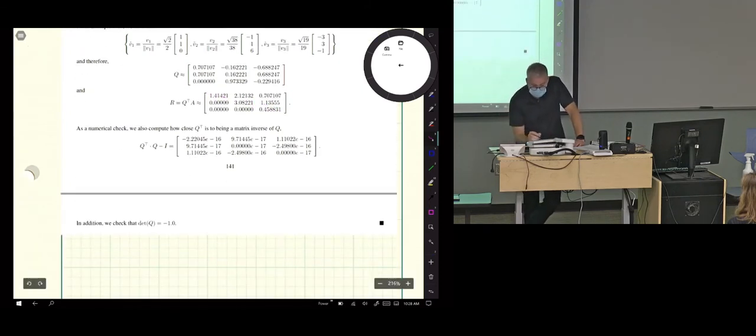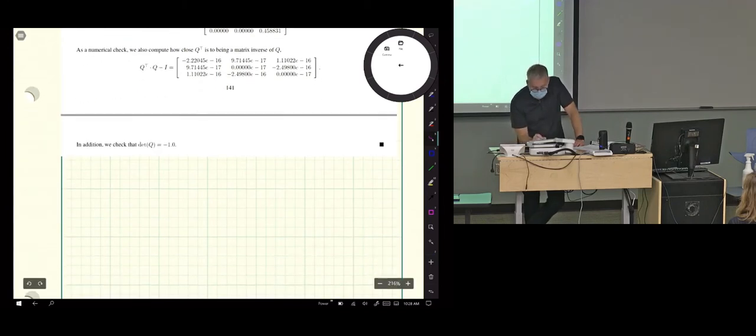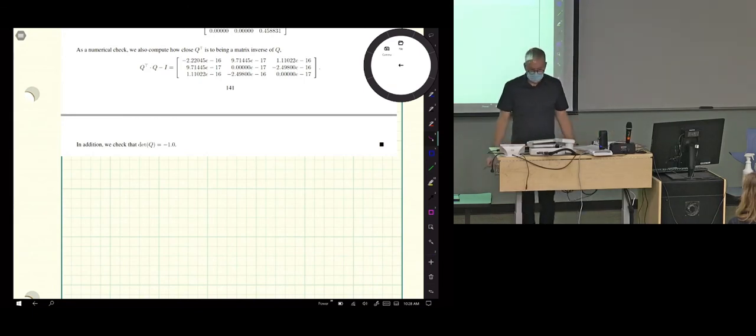And then to show you that Q transpose minus Q transpose times Q is the identity, I do the Q transpose times Q minus the identity, and the biggest number we have is something like this one here, which is 10 to the minus 16. So, it looks pretty good. That's close enough to zero for you guys now? And then a fact that we haven't gone through is that these orthogonal matrices, their determinant is either plus one or minus one, just like permutation matrices.